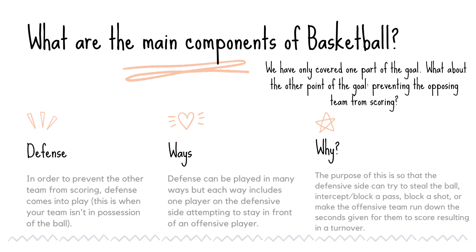The second part is defense, and we've only covered one part of the goal. What about preventing the opposing team from scoring? Defense comes into play when your team is not in possession of the ball. Defense can be played in many ways, but each way includes one player on the defensive side attempting to stay in front of an offensive player. The purpose of this is so that the defensive side can try to steal the ball, intercept or block a pass, block a shot, or make the offensive team run down the seconds given for them to score, resulting in a turnover. Essentially, you want to get the ball back in your possession so you can be on offense again and set up for a scoring opportunity.